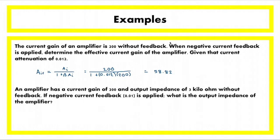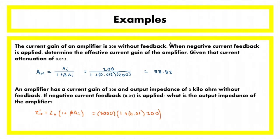For the next example, an amplifier has a current gain of 200 and an output impedance of 3 kilohms without feedback. If negative current feedback of 0.01 is applied, what is the output impedance? We use Z_O prime equals Z_O times (1 plus beta·AI). Substituting Z_O equals 3000, beta equals 0.01, and AI equals 200, the new output impedance is equivalent to 9 kilohms.